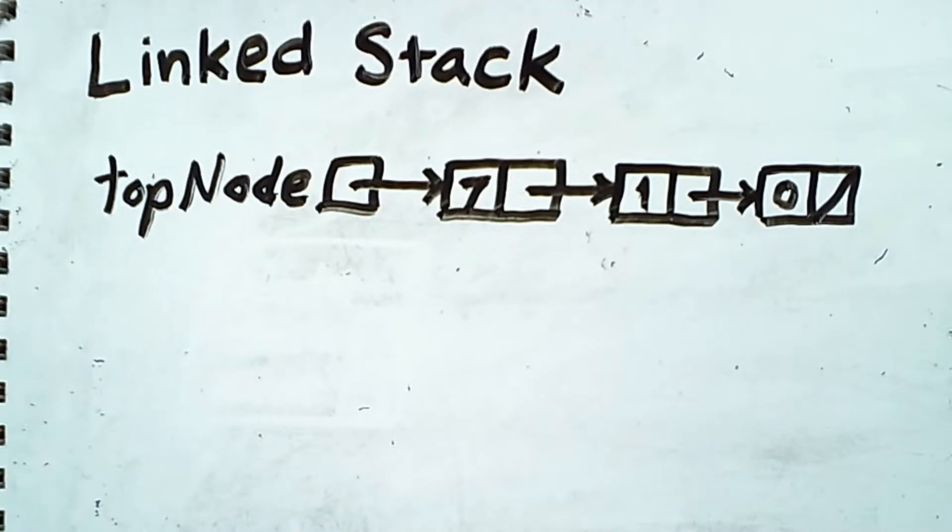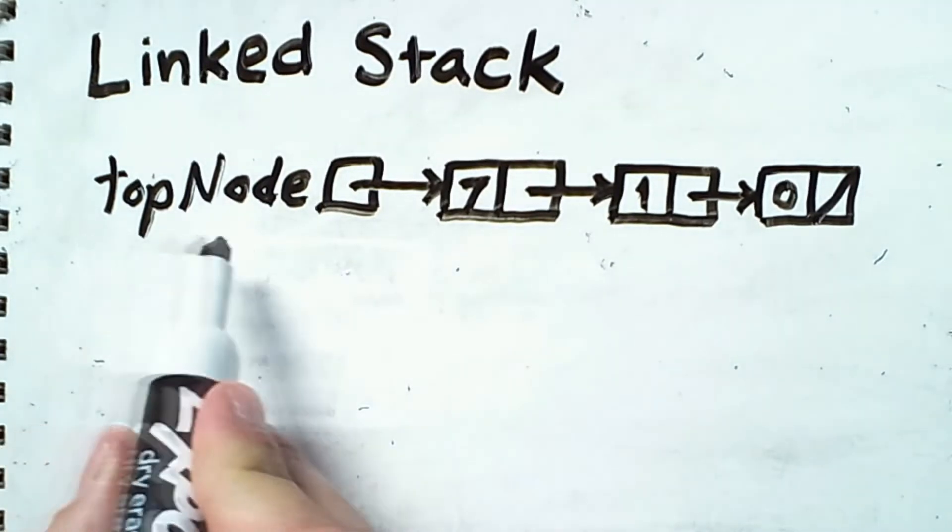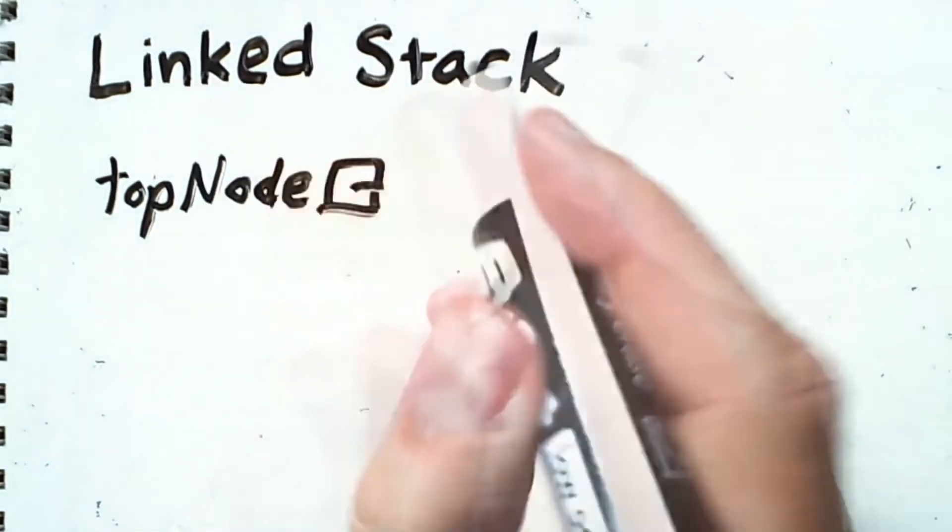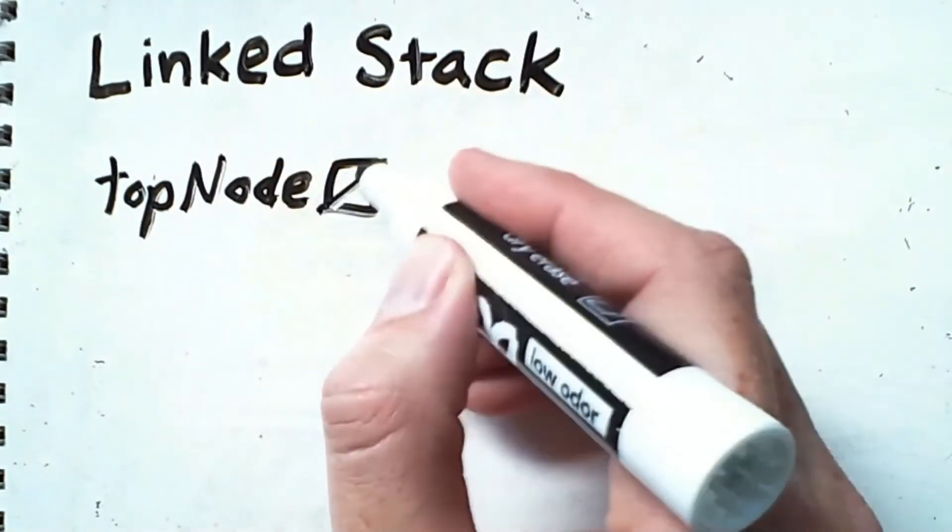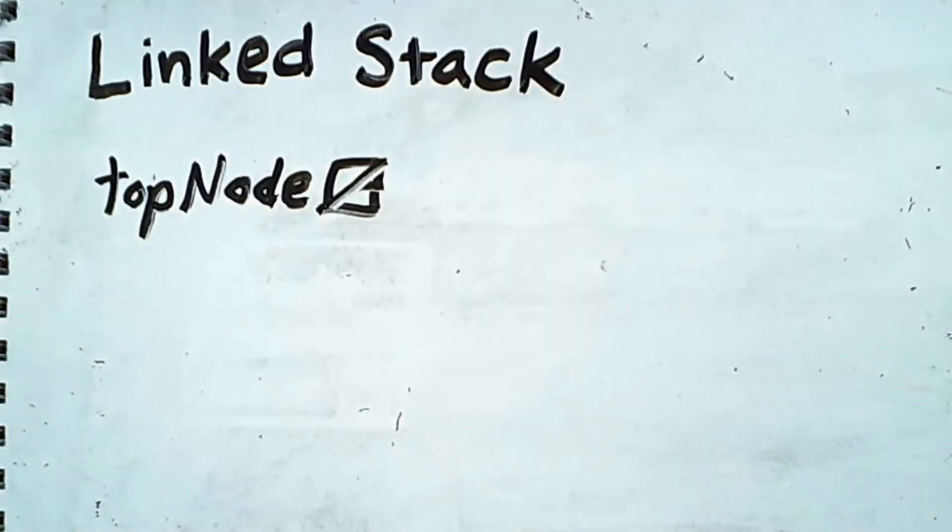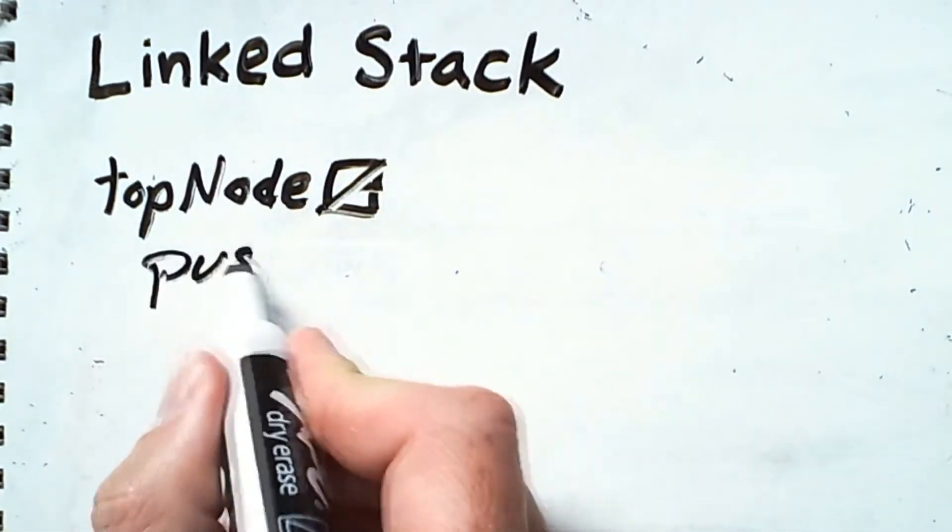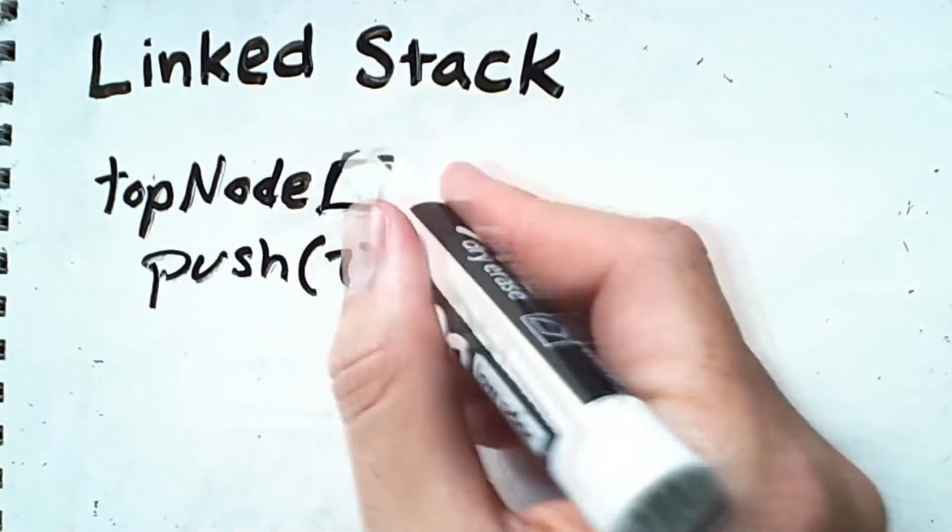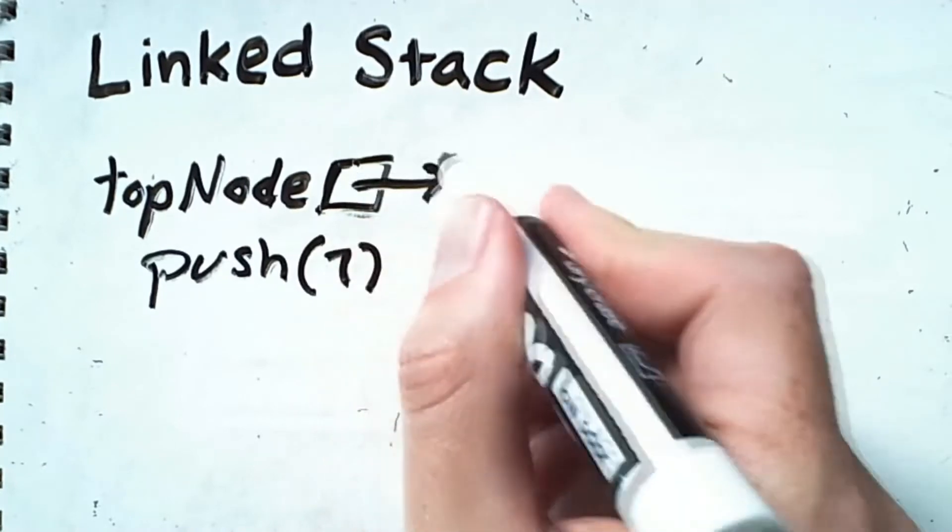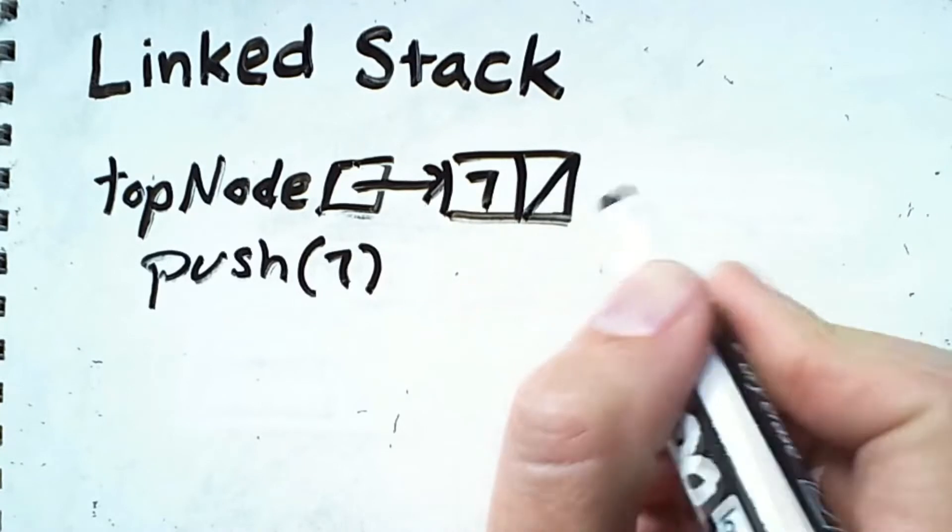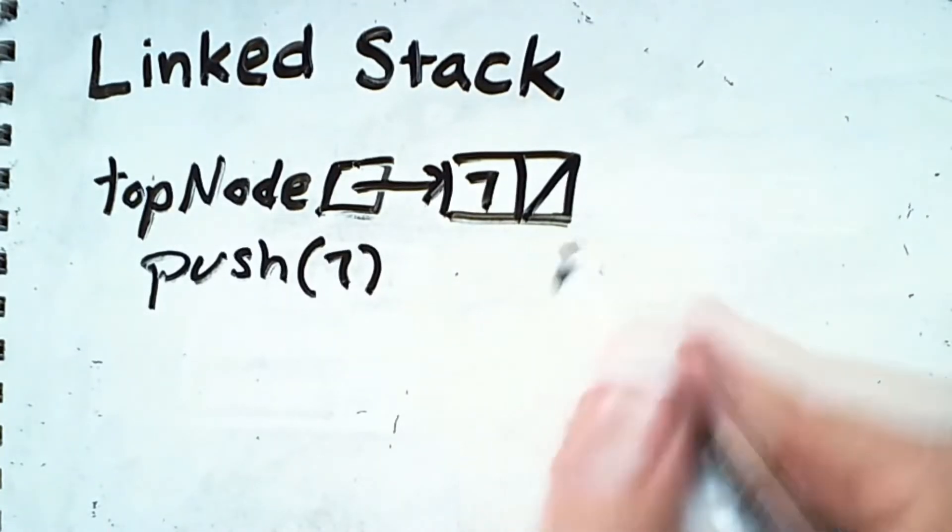The stack always maintains a reference to its top node. If the stack is empty, then this one variable will simply have a slash through it because it will be a null reference. If we are then to push a value onto it, we will create a new node and put that value into the data portion and have the null reference be the next link of that newly created node.